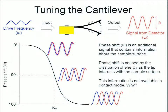Why is phase shift not available in contact mode? It's simple: in contact mode, there's no phase to be shifted. The cantilever is not vibrating — it's in constant contact. That's why we can derive this new information from tapping mode, as opposed to contact or even non-contact modes.